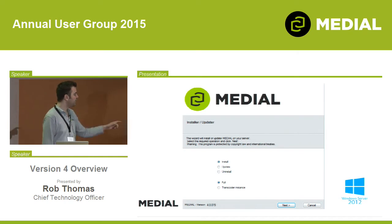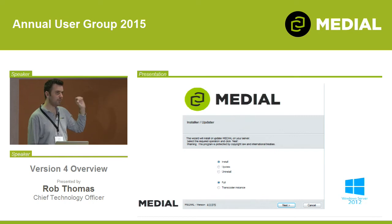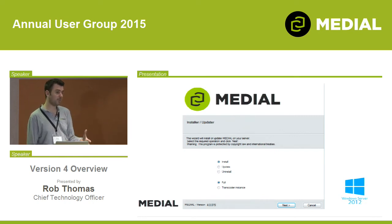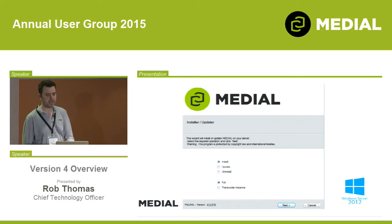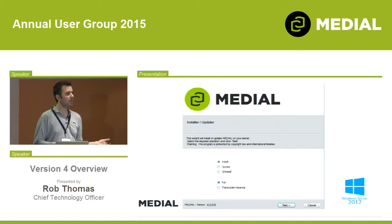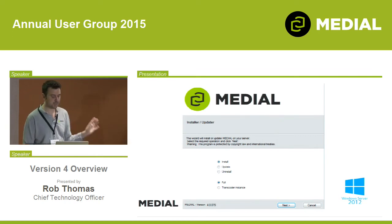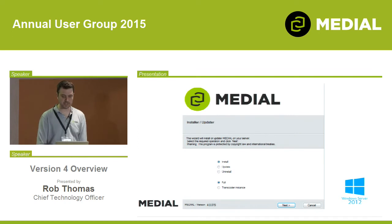You can install either a full Medial instance — which the vast majority of people here have — or a transcoder instance. The transcoder instance just does the conversion of media files only, as a means of scaling Medial. I've got a whole separate presentation on that.